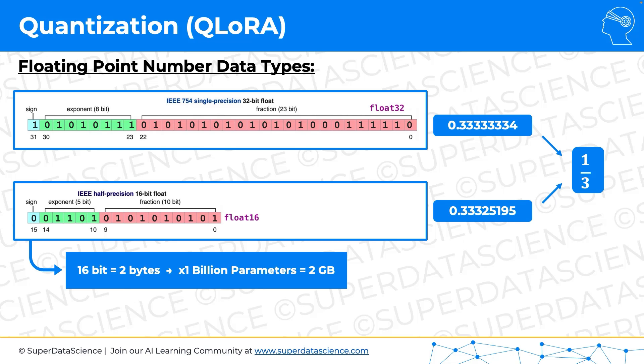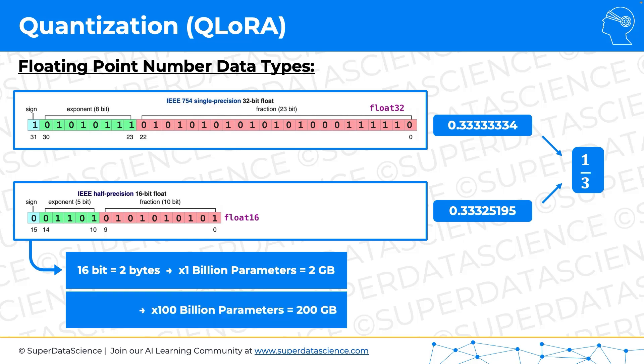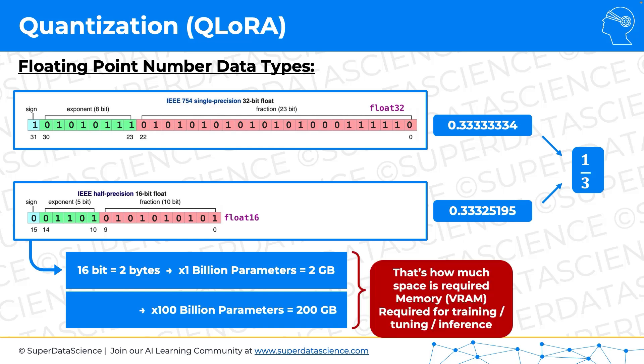16 bits equals two bytes, and if you multiply that by one billion parameters in a very small large language model, that equals two gigabytes. If you multiply that by 100 billion — a decent-size large language model as of today — that gives you 200 gigabytes. Now it's not about space on the hard drive; hard drives these days are terabytes and terabytes, but this is more about the space required for training, fine-tuning, or inference on GPU memory, also called VRAM — video random access memory.